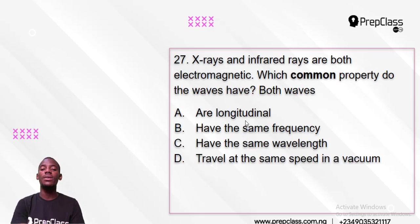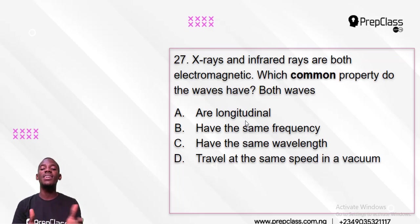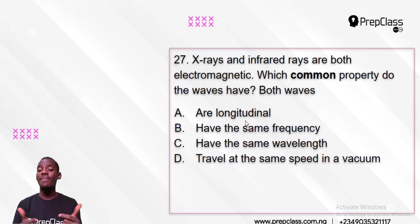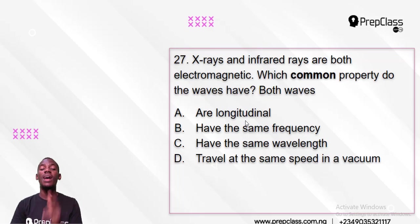Let's go on to number 27. X-ray and infrared ray are both electromagnetic waves. Which common properties do these waves have? Option A: they are longitudinal. B: they have the same frequency. C: they have the same wavelength. D: they travel at the same speed in a medium. Now actually they are not longitudinal, because they are electromagnetic waves.